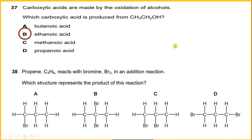Propene C3H6 reacts with bromine Br2 in an addition reaction. Which structure represents the product of this reaction? You can see C3H6 plus Br2, then we have Br2. So the most suitable diagram should be C, where you have C3 (1, 2, 3), you have H6 (1, 2, 3, 4, 5, 6), and then Br2 (1, 2). So the answer would be C.